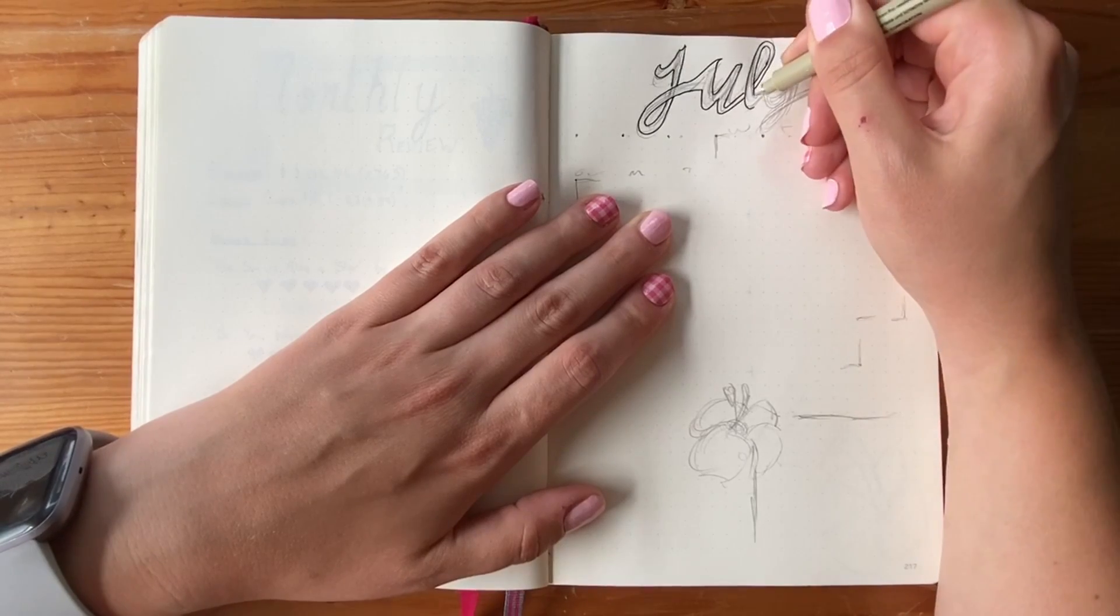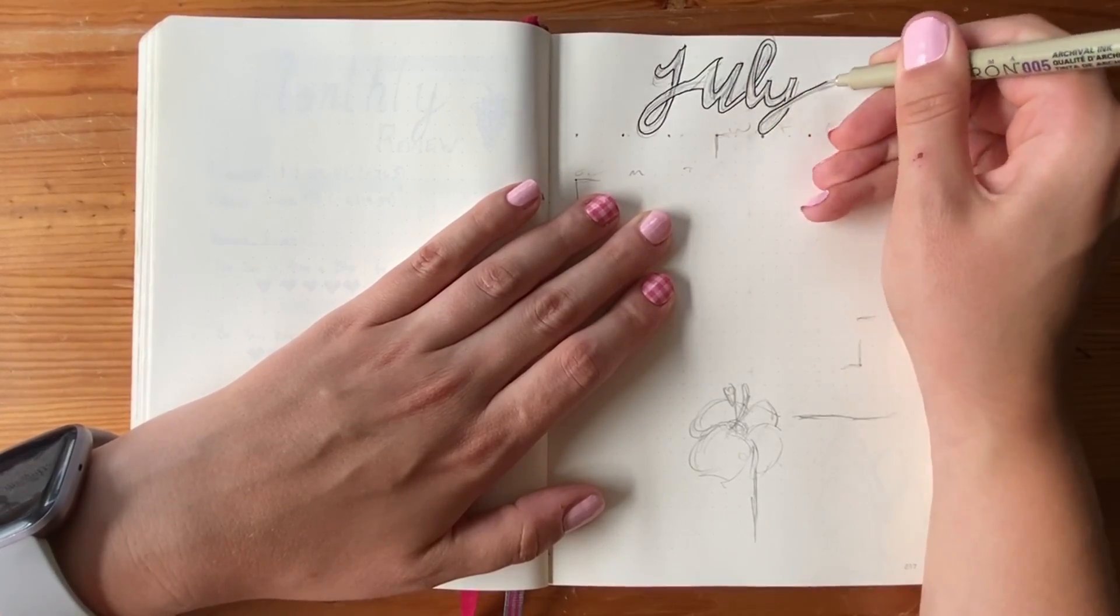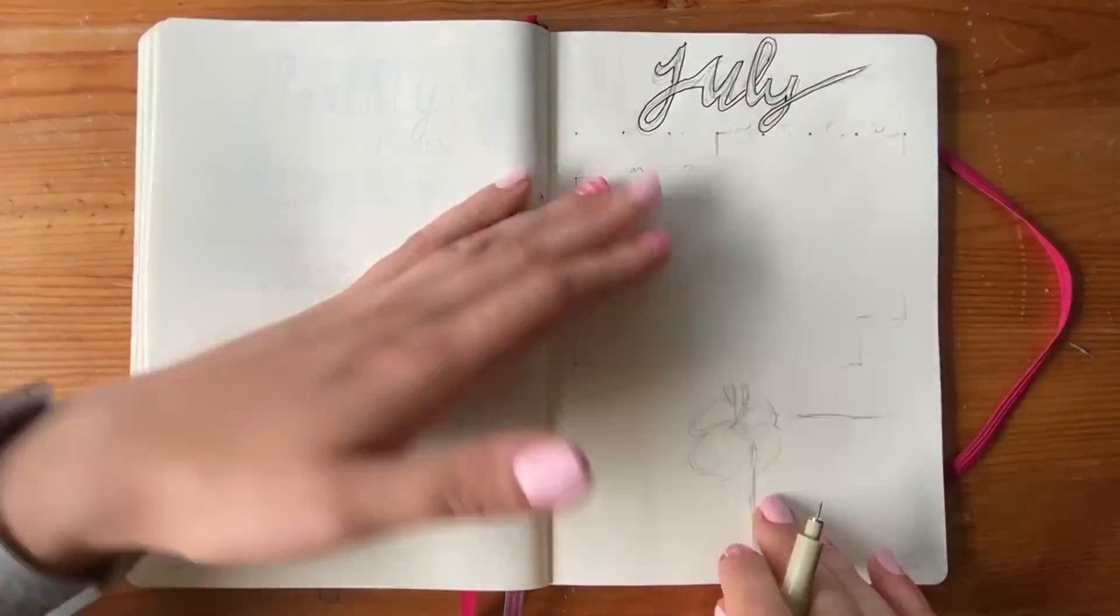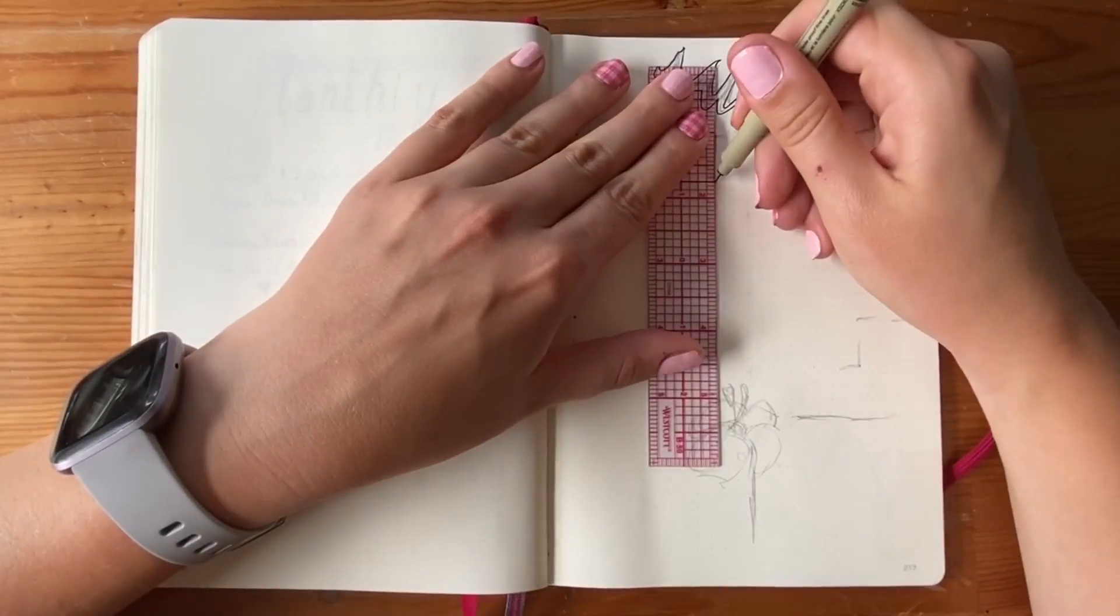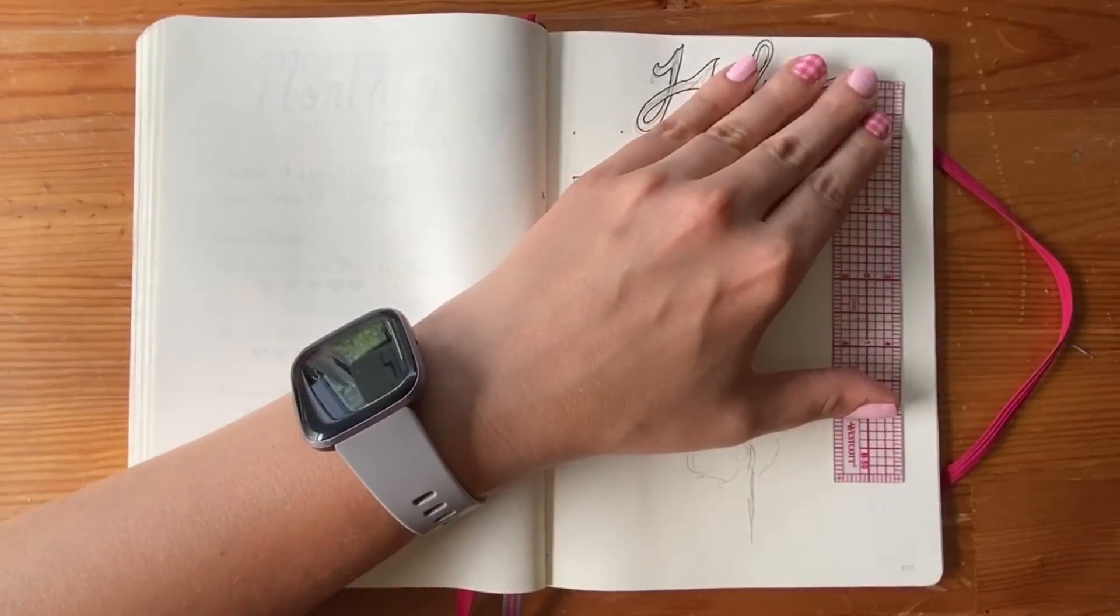So today what I'm doing is setting up my July spread. July is my birthday month so I wanted to do kind of a bright fun tropical theme here. I've got some hibiscus flowers we're going to bring in. I'm going to bring in some bright colors, pink and orange.